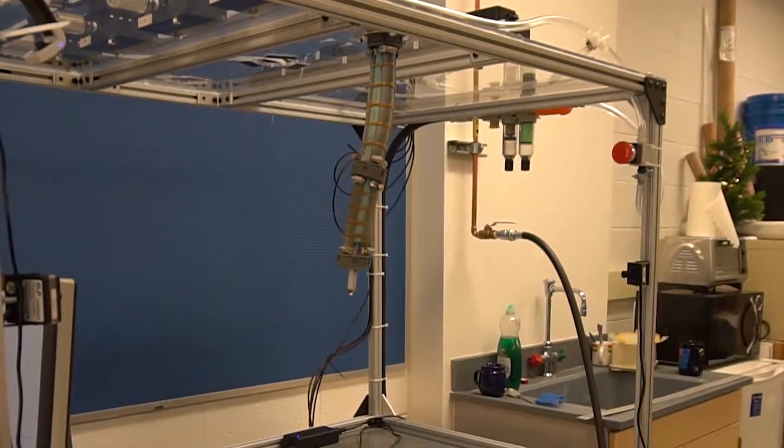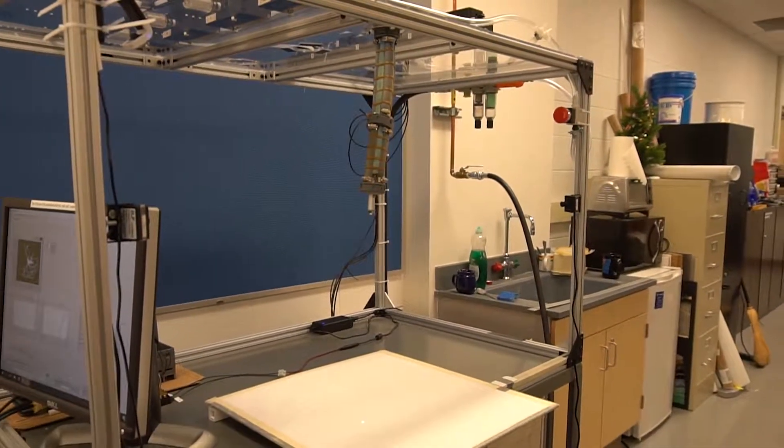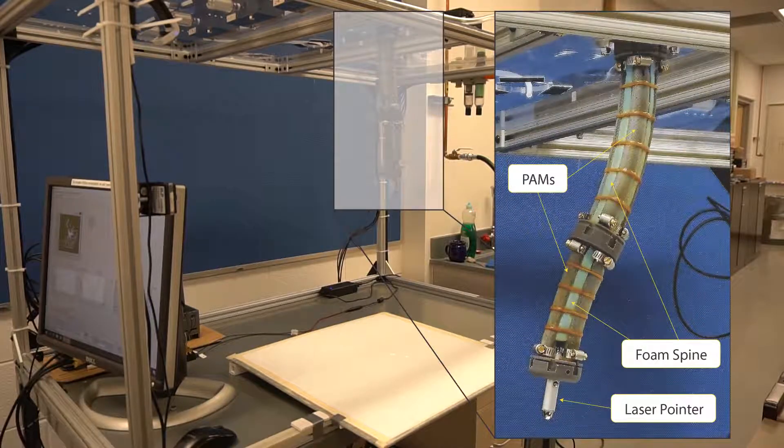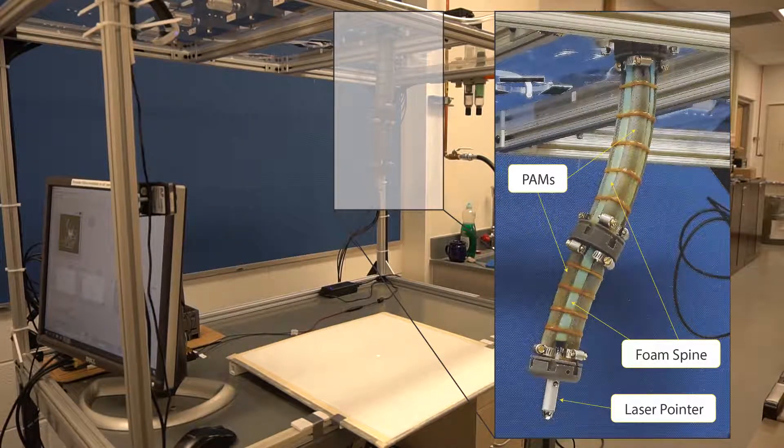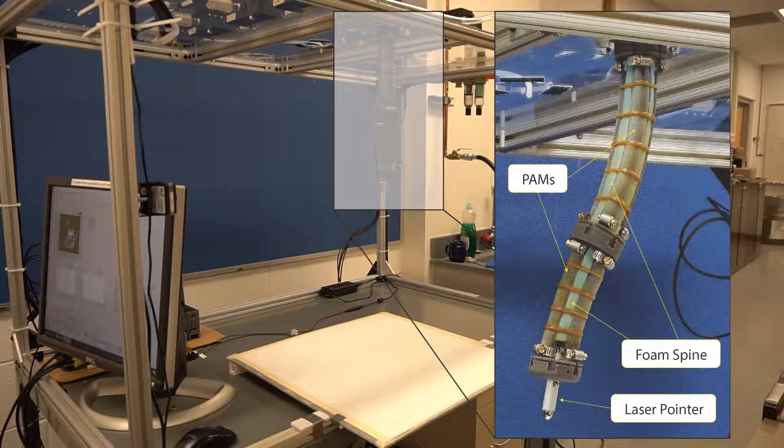In this work we apply the Koopman-based method to model and control a bending soft robot composed of pneumatic artificial muscles or PAMs arranged around a foam spine with a laser pointer mounted to the end effector.